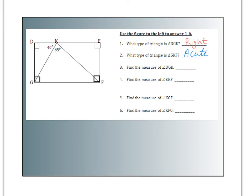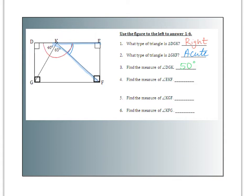Number 3: find the measure of angle DGK. Tracing D to G to K, the sum of the angles in every triangle is 180. Using this green triangle, I do 180 minus 90 minus 40, and I have 50 left for the measure of angle DGK — 50 degrees. Number 4: find the measure of angle EKF. These three angles are on a straight line, so they should be supplementary. Taking 180 minus 65 minus 40, I believe that leaves 75 degrees.